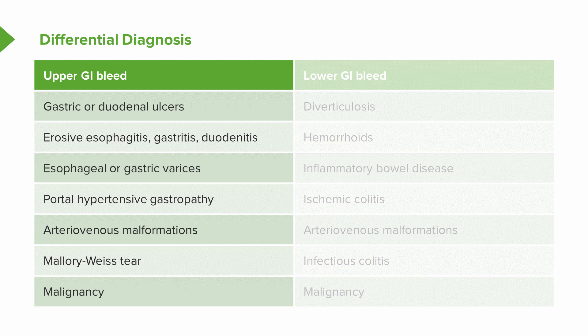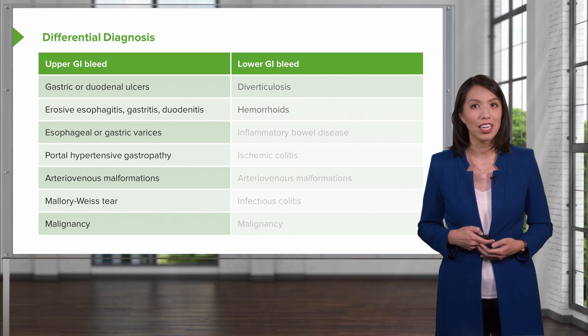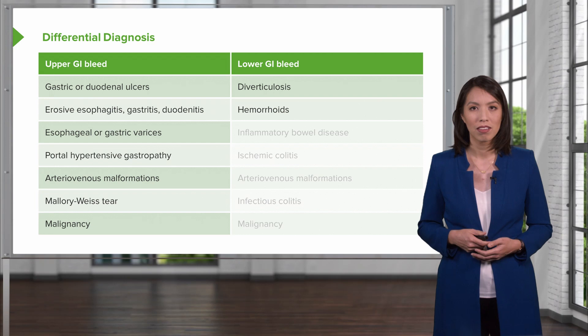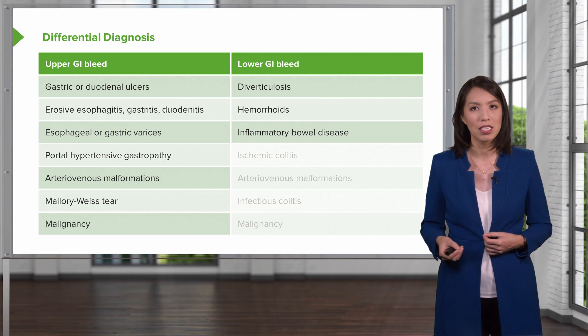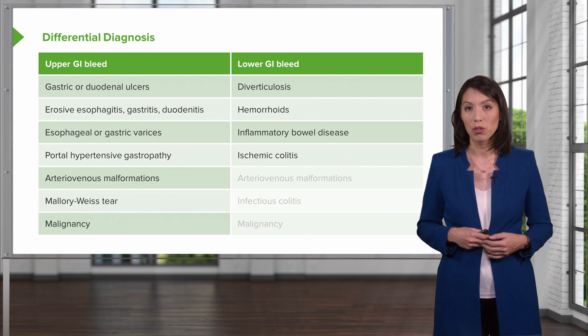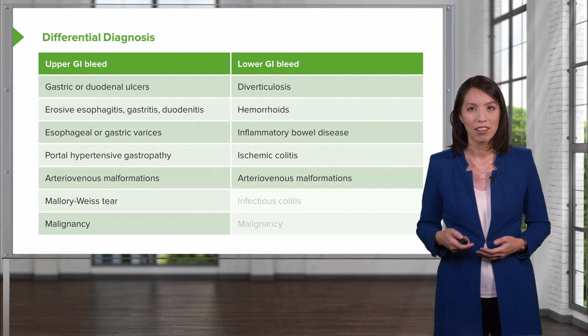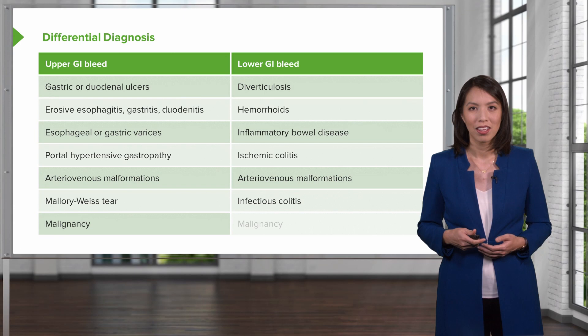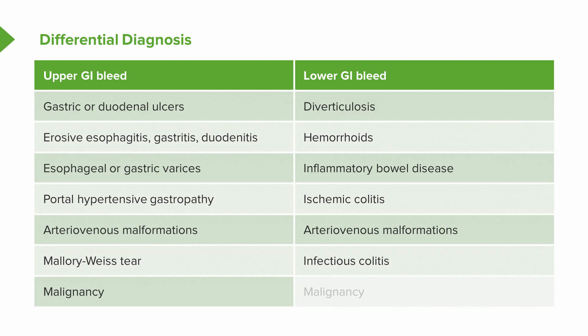For lower GI bleeds, patients with chronic constipation should raise concern for diverticulosis and hemorrhoids. Long-standing diarrhea with bloody bowel movements may suggest inflammatory bowel disease. Abdominal pain with bleeding may indicate ischemic colitis. As with upper GI bleeds, always consider AVM. Infectious symptoms alongside bloody bowel movements may suggest infectious colitis. And cancer should always remain on the differential.